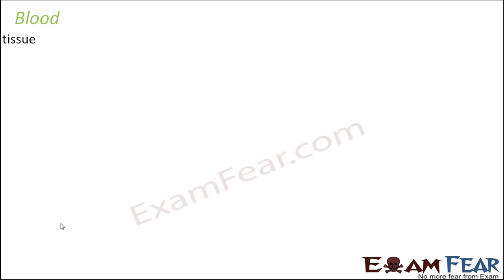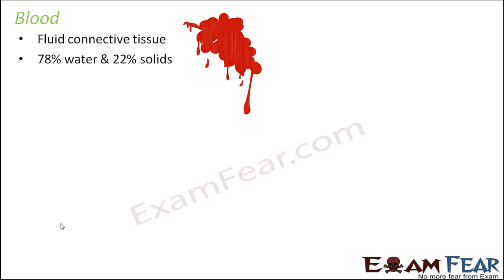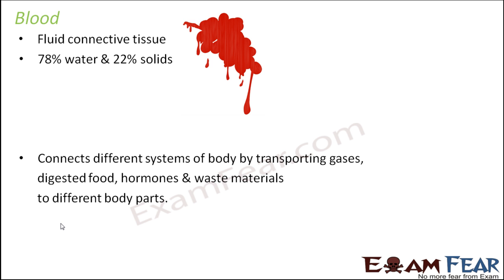We will start with blood. Blood is a fluid connective tissue. It basically has 78% water and 22% solids, and because of this high content of water, it is fluid in nature. It connects different systems of the body by transporting gases, digested food, hormones, and waste materials to different body parts. That is why blood is considered a connective tissue.